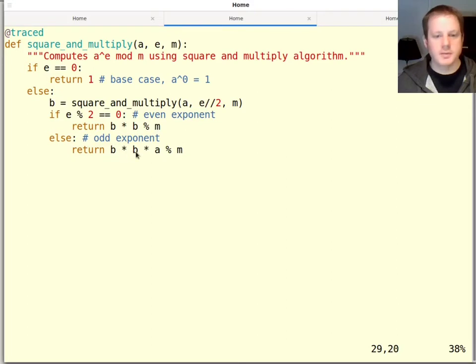And if it's odd, we square it and multiply by a one more time mod m. So it's always mod m. The modulus doesn't change, and the a doesn't change either. All that's changing is the exponent is getting smaller in these recursive calls.